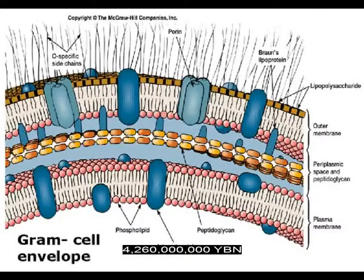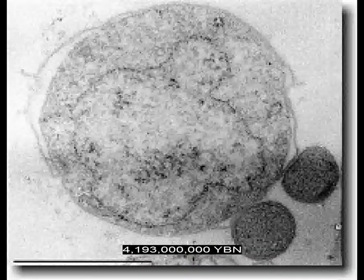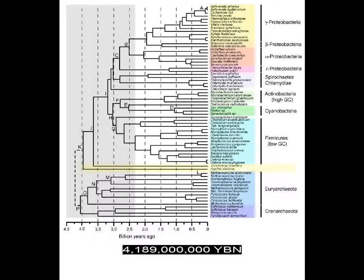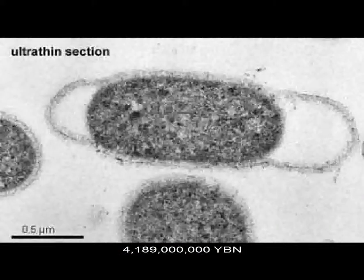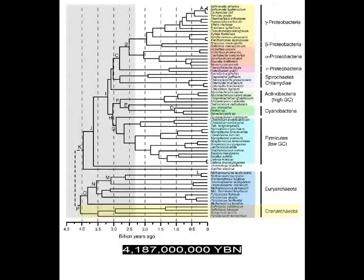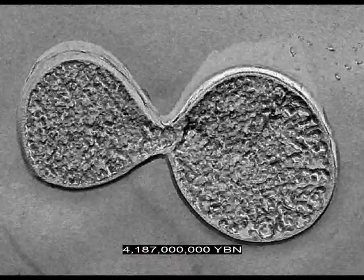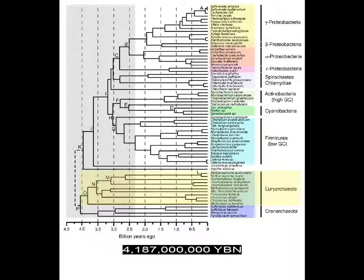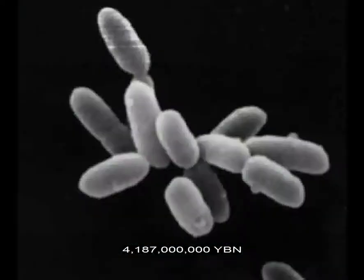A cell wall evolves. Archaea, also called archaebacteria, evolve. The eubacteria hyperthermophiles evolve: Aquifex, Thermotoga. Prokaryote flagellum. Archaea Crenarchaeota, Cephalibus. Archaea Euryarchaeota. Methanogens, halobacteria — the earliest cell response to light.